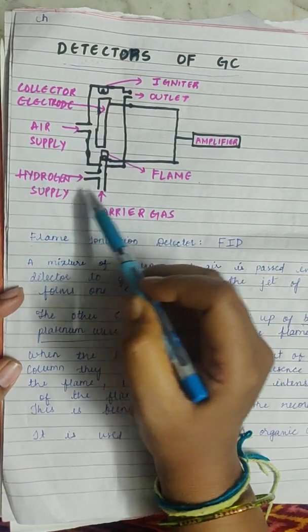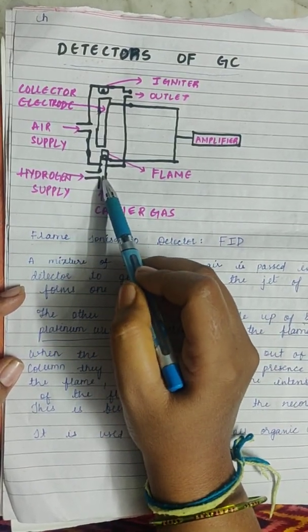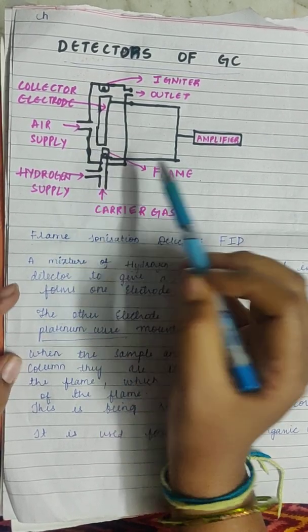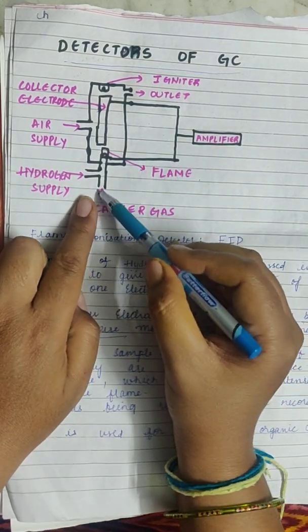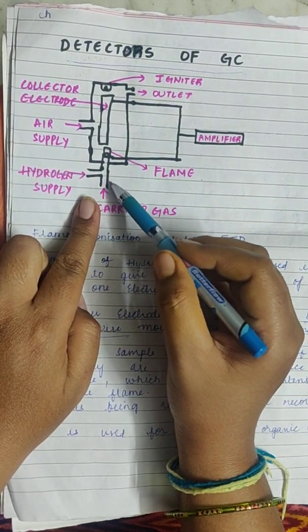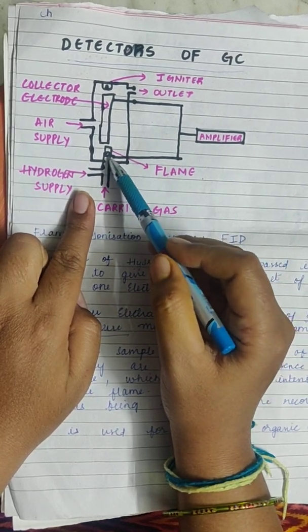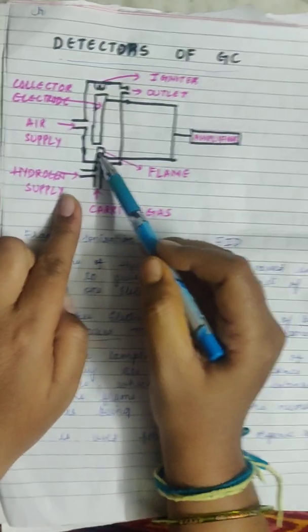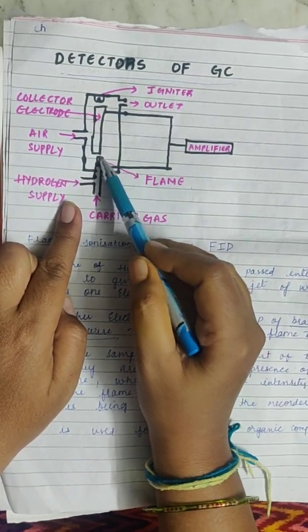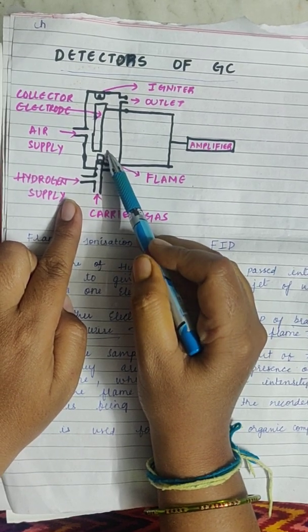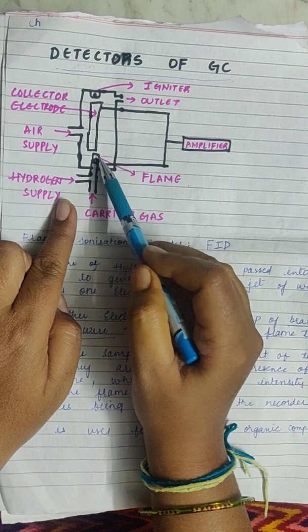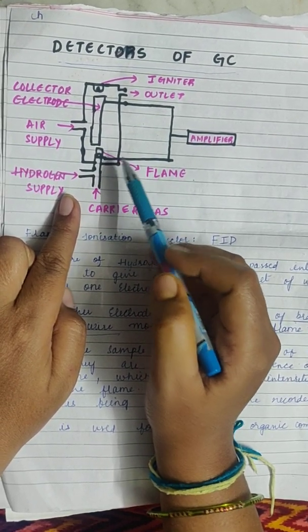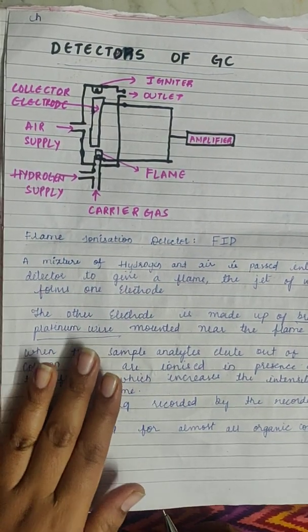Looking at the diagram: hydrogen is supplied from one inlet and air from another; both mix and a flame is produced. The carrier gas carries the eluents, and if they contain hydrocarbons, they are ionized in the presence of the flame, increasing the flame intensity. This is detected by the detector, producing a signal. This is how the flame ionization detector works.